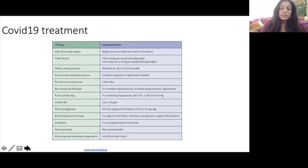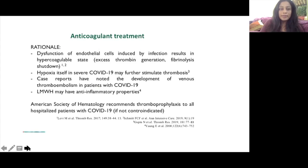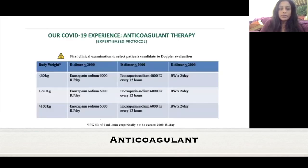Antibiotics are recommended for secondary bacterial infections, especially if procalcitonin is elevated. Steroids are not recommended and ECMO is sometimes needed for the sickest patients. COVID-19 induces a hypercoagulable state through excess thrombin generation and fibrinolysis shutdown, as well as hypoxia itself. The American Society of Hematology recommends anticoagulation for all patients. Based on a lecture by Professor Carlo Salmi from Lombardy, Italy, they recommend enoxaparin, with anticoagulation dosing based on D-dimer levels and body weight.